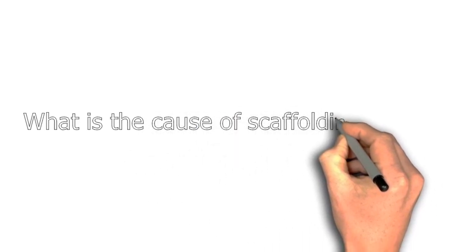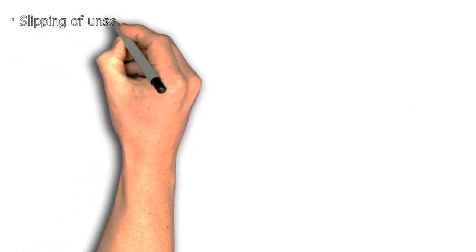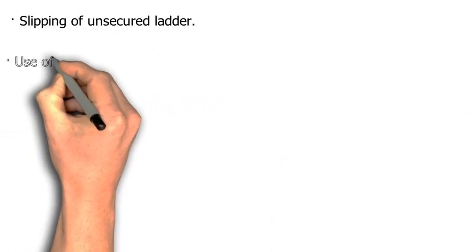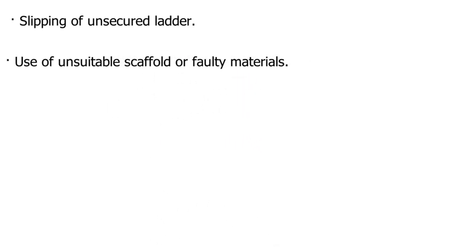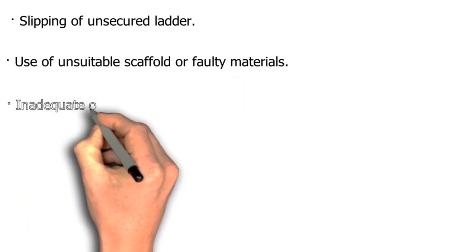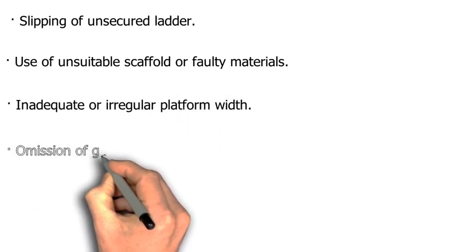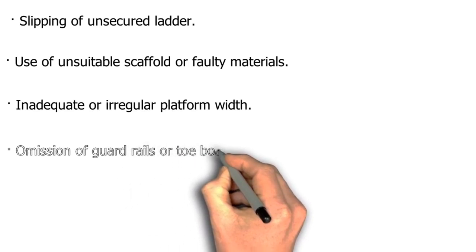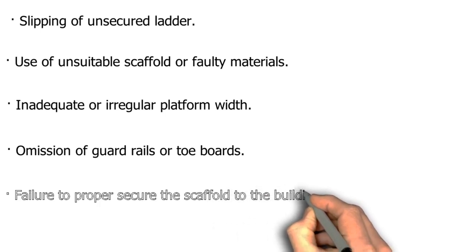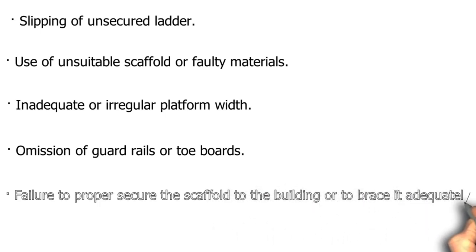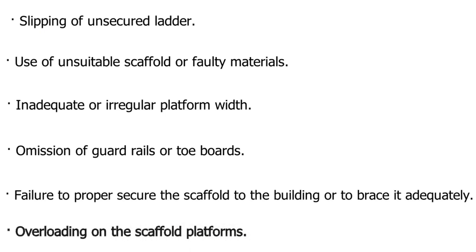What are the causes of scaffolding failure? Slipping of unsecured ladder; use of unsuitable scaffold or faulty materials; inadequate or irregular platform width; omission of guardrails or toe boards; failure to properly secure the scaffold to the building or brace it adequately; overloading on the scaffold platforms.